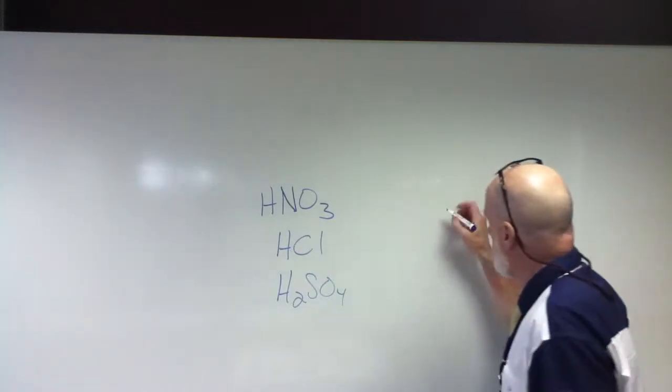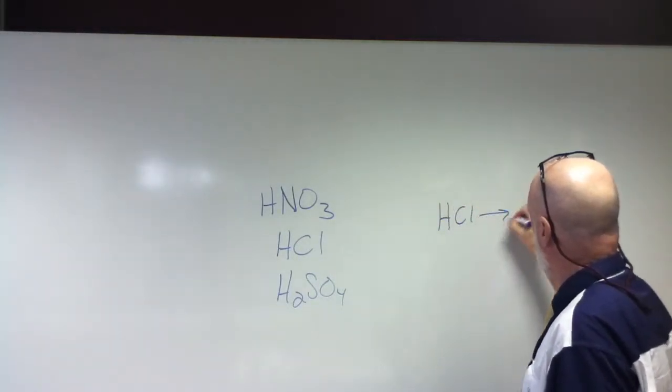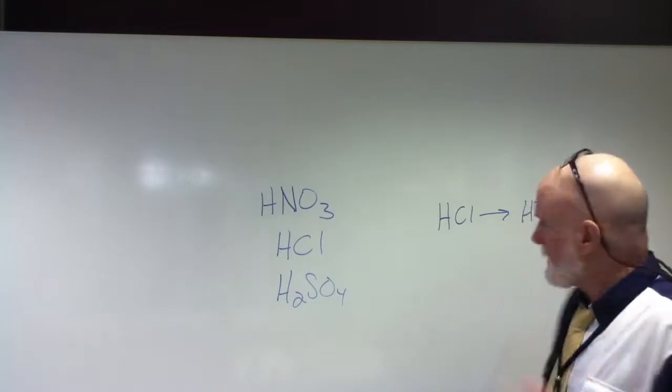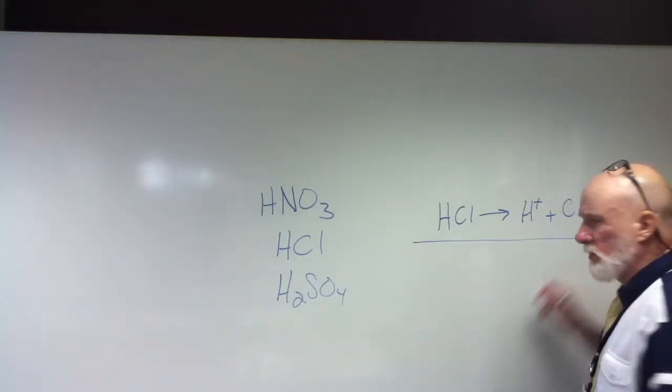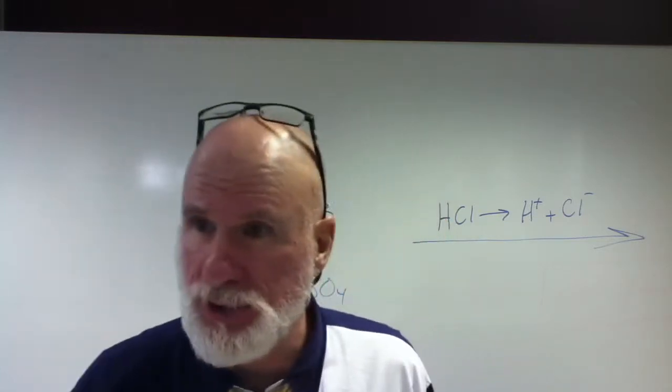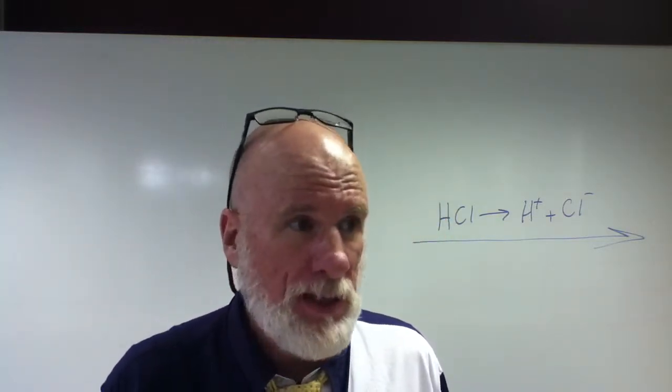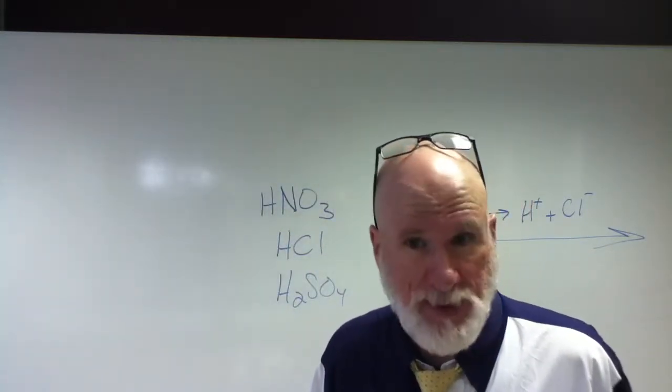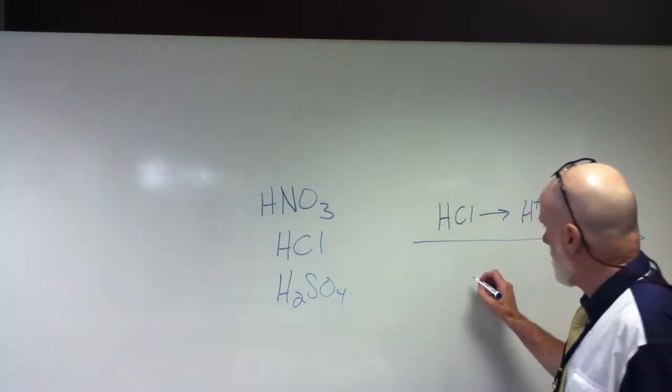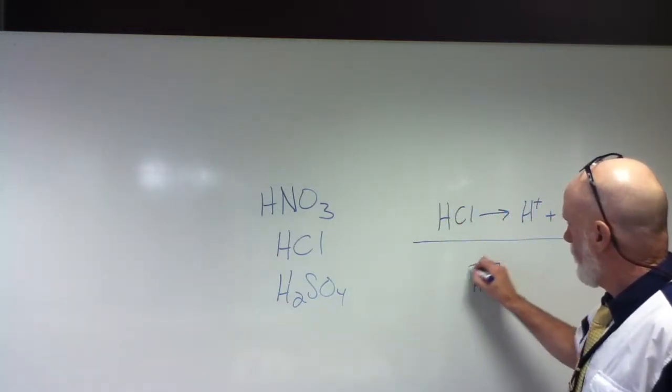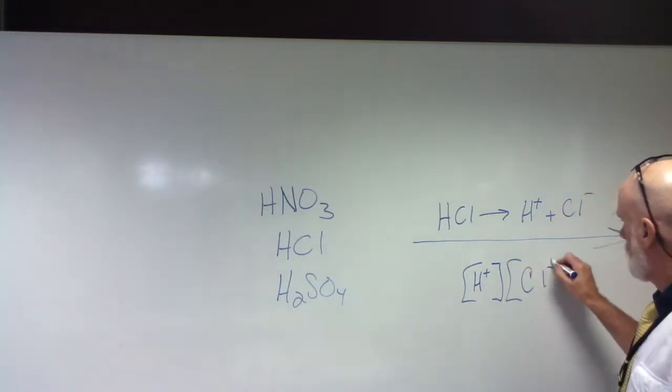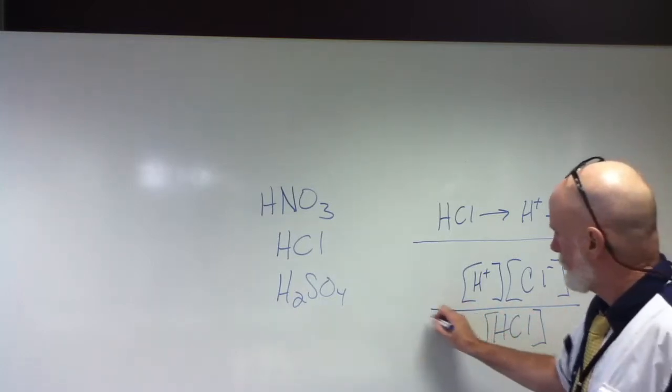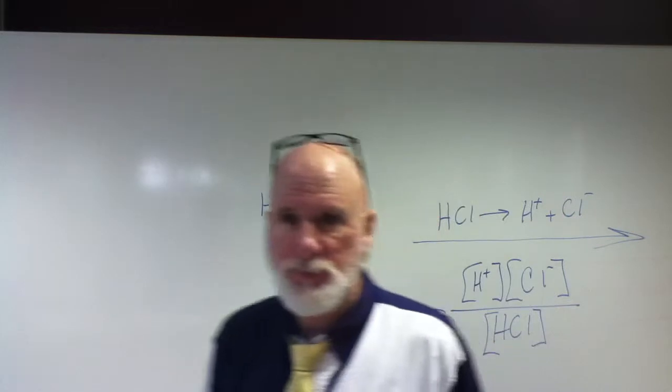Let's say I have HCl. Doesn't this go all the way to the right? In other words, it dissociates completely. If you're going to write the Ka expression using the chemical formula equation, it's going to be H+ times Cl- over the HCl concentration equals Ka.